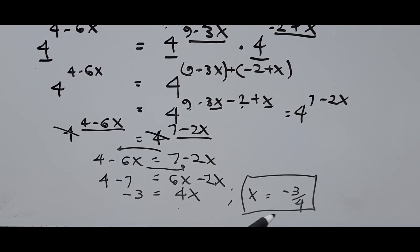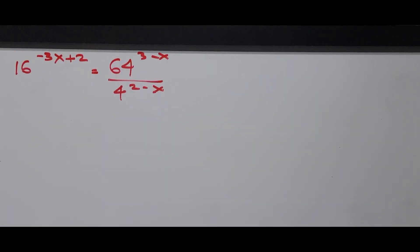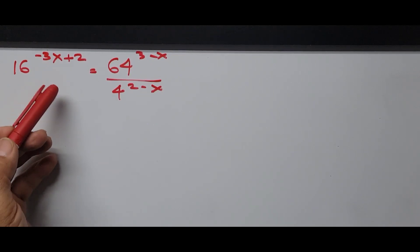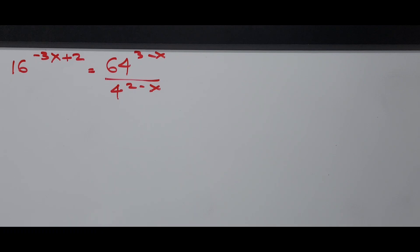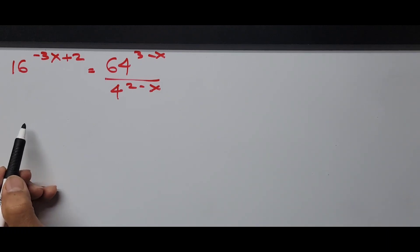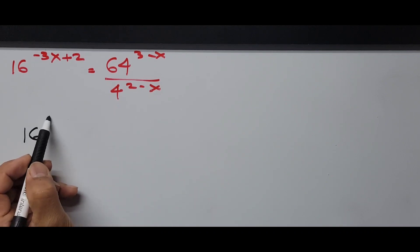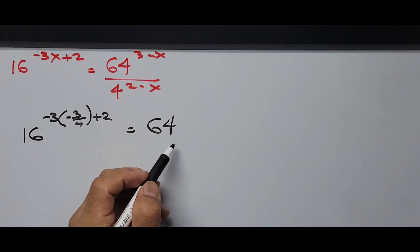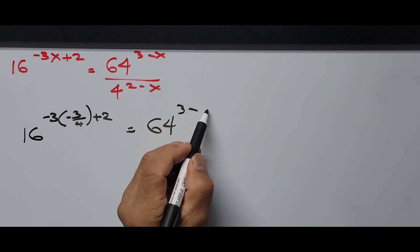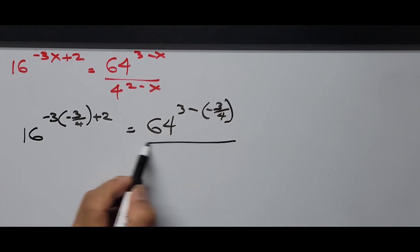Now we verify our answer by substituting x equals negative 3 fourths back into the original equation: 16 raised to negative 3x plus 2 equals 64 raised to 3 minus x, over 4 raised to 2 minus x. Substituting gives 16 raised to negative 3 times (negative 3/4) plus 2 on the left, and 64 raised to 3 minus (negative 3/4) divided by 4 raised to 2 minus (negative 3/4) on the right.